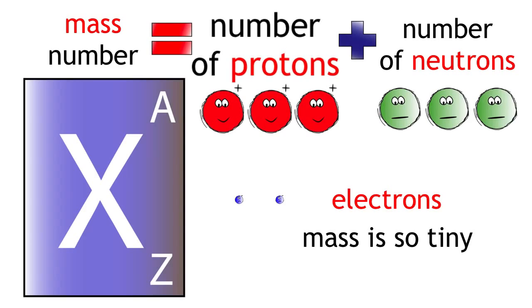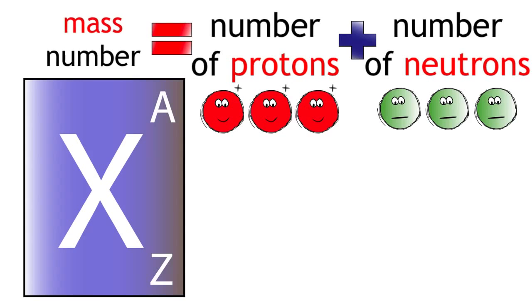If the number of protons always stays the same in a particular element and we are ignoring the mass of electrons, it must mean the number of neutrons is causing the difference in mass.